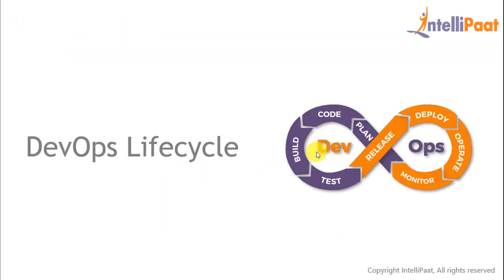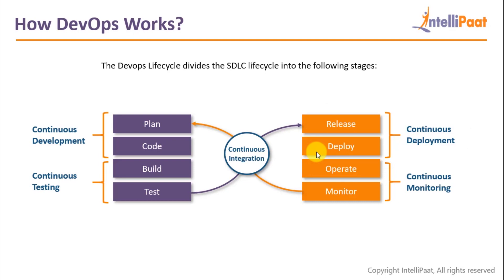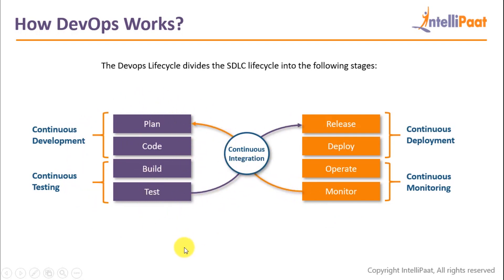Now let's discuss how the DevOps lifecycle actually works. If you were to expand that infinity diagram, it would look something like this: you have planning, coding, building, and testing on the developer's side. Then on the ops side you have release, deploy, operate, and monitor. In between, we have to integrate the developer side with the operations side — and this is done using continuous integration.